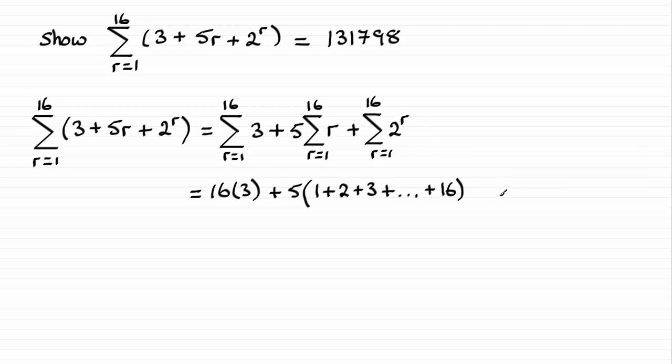And on this last term here, we've got to add 2 to the power 1 when R is 1. 2 to the power 1, plus when R is 2, 2 to the power 2, and so on. 2 to the power 3, plus all the way up to when R is 16. So that's adding 2 to the power 16. Well, we know that's 16 times 3. That's easy. That's 48. So we'll just do that.